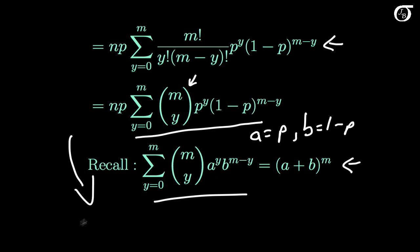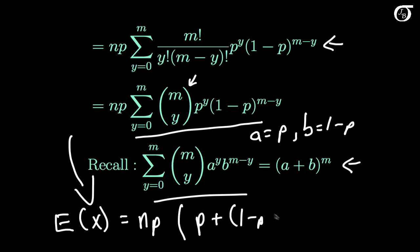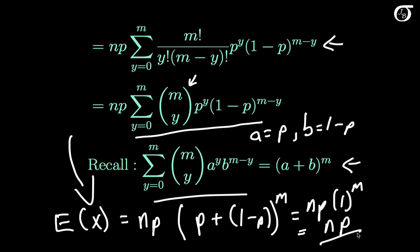So our expectation of x is going to be equal to np, and then this sum equals p plus (1-p) raised to the m-th power. But p minus p inside the brackets is 0, leaving 1 inside the brackets, so this is just n times p times 1 to the m, which is n times p. Therefore the expectation, or mean, of a binomial random variable x is n times p.